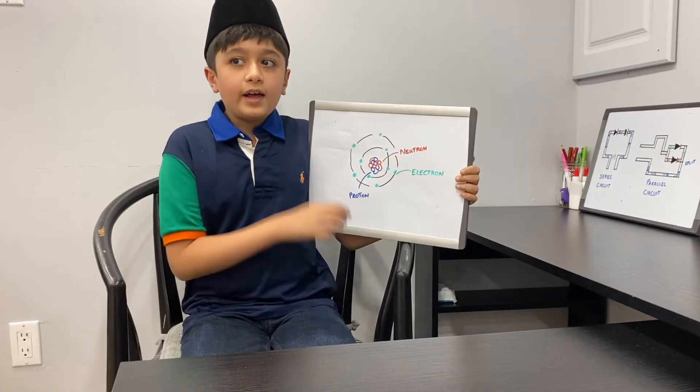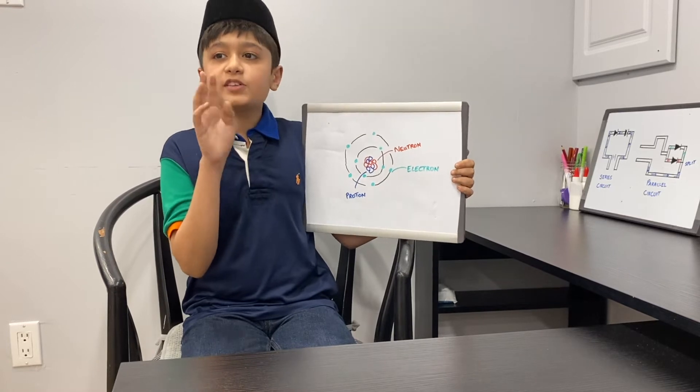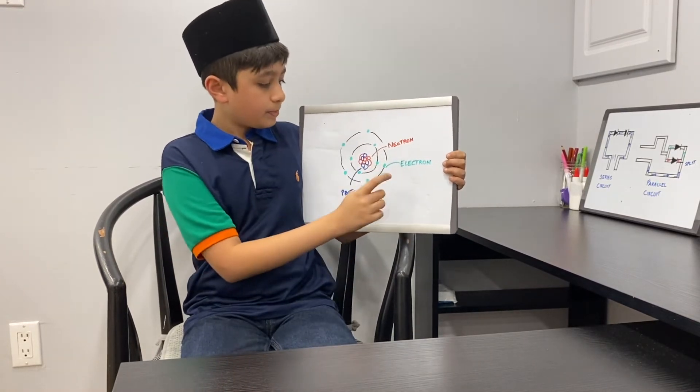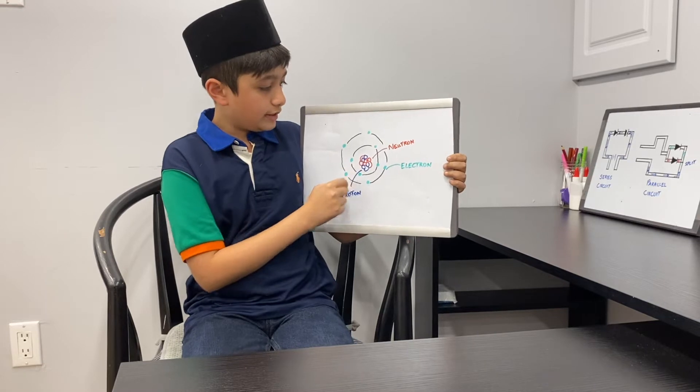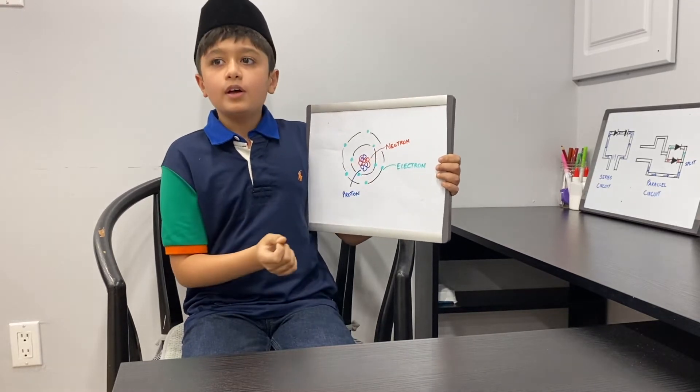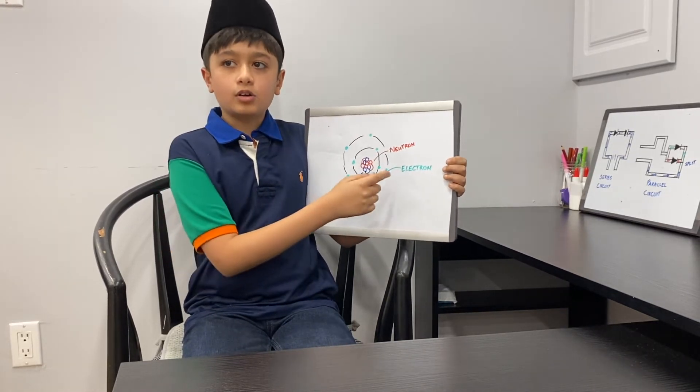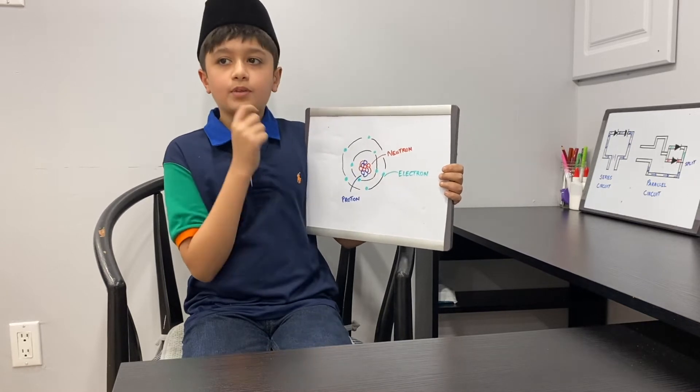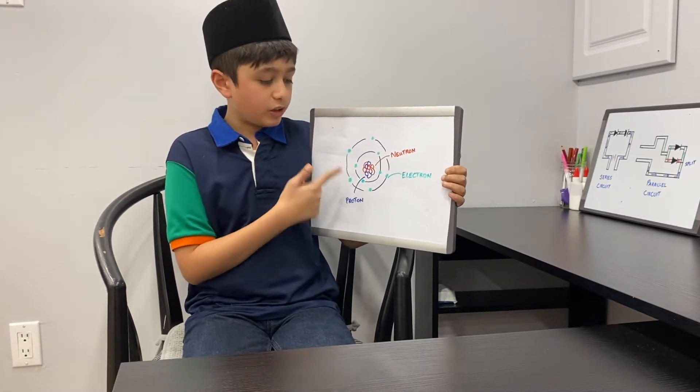To understand electricity you have to look close — really, really close. Electrical circuits like the one in a light switch work because of the way electrons behave, and to look at electrons first you have to look at atoms. Atoms are made of three different teeny tiny particles: protons, neutrons — which are clumped together in the center of the atom — and electrons, buzzing in a sort of cloud.